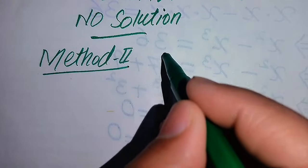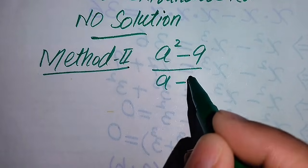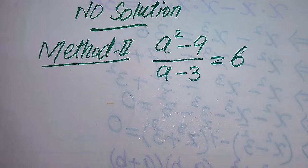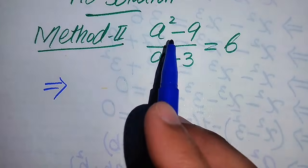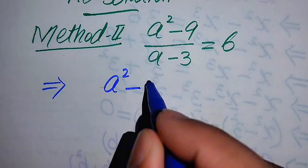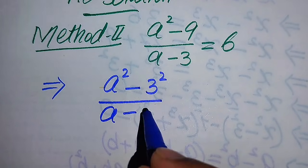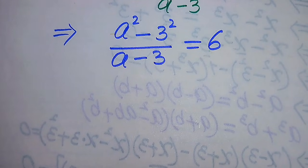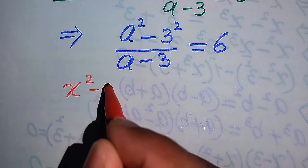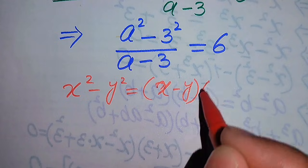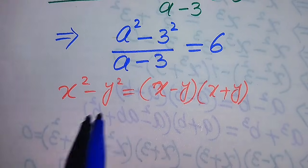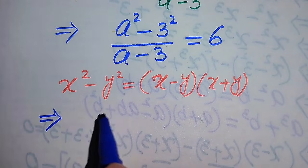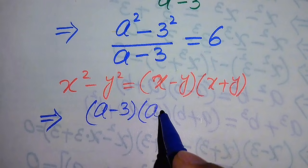Now we solve this problem using the second method. The given equation is a² minus 9 divided by a minus 3 equals 6. This method is the quickest. We rewrite a² minus 9 as a² minus 3², and apply the algebraic identity x² minus y² equals (x minus y)(x plus y) to the numerator. The left hand side becomes (a minus 3)(a plus 3) divided by (a minus 3) equals 6.